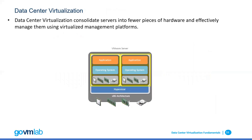Data center virtualization consolidates servers into fewer pieces of hardware and effectively manages them using virtualized management platforms. As you can see, we have an x86 architecture hardware, on top of that we have a hypervisor, and on top of that we have created virtual servers. Each virtual server is similar to a physical server, having its own virtual hardware — memory, CPU, network, hard drive — and operating system. That's pretty much about virtualization.